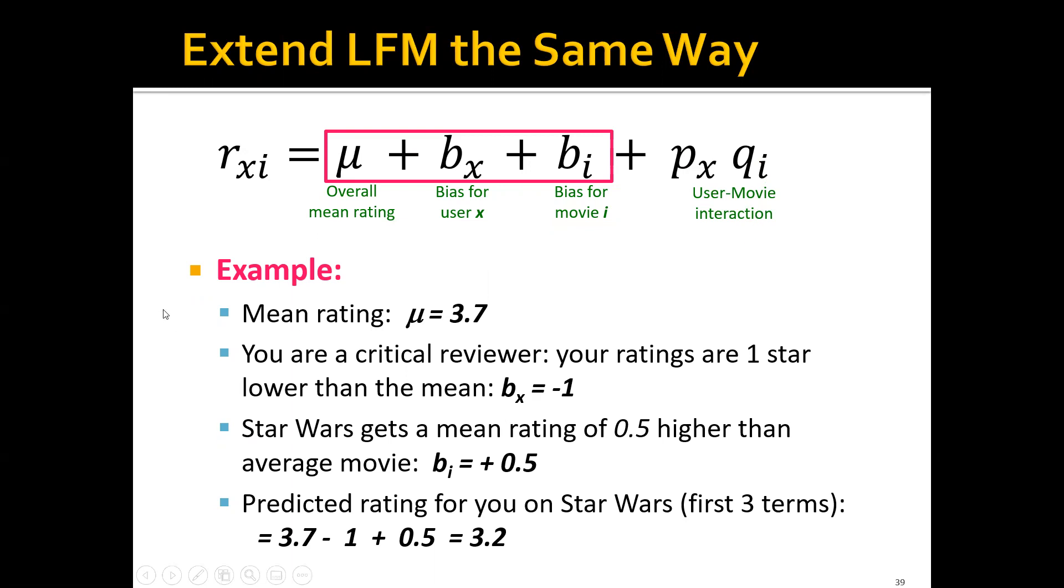For example, let's say that we have the mean rating, the global mean rating of mu equals 3.7. You are a critical reviewer, so your ratings are one star lower than the mean. So bx equals minus one here. Star Wars gets a mean rating of 0.5 higher than average movie, so bi is positive 0.5.